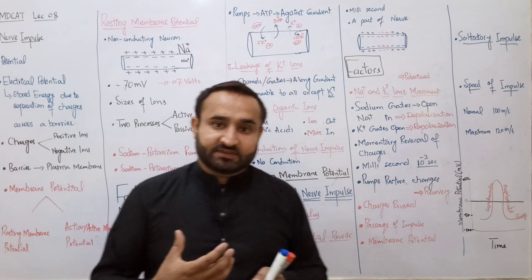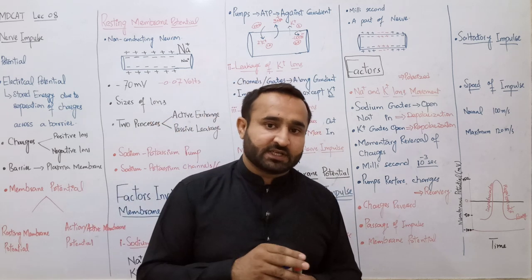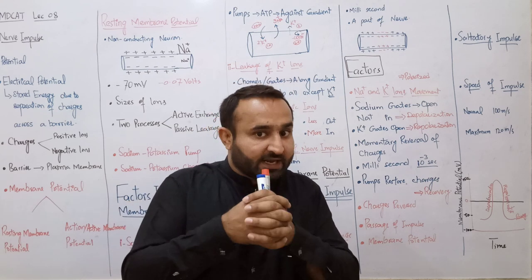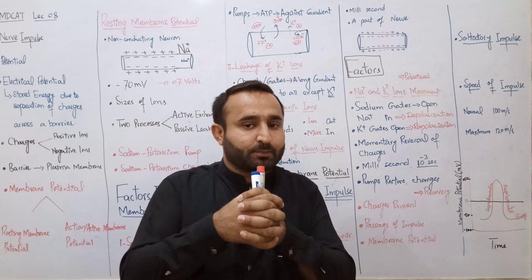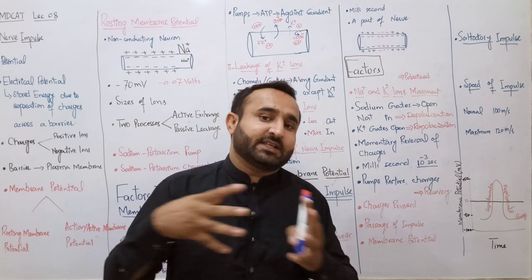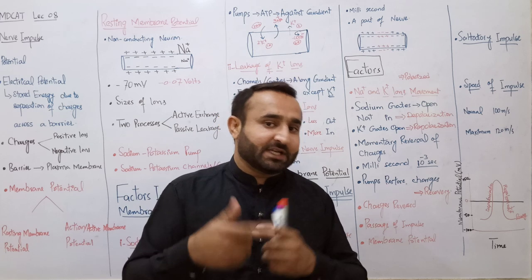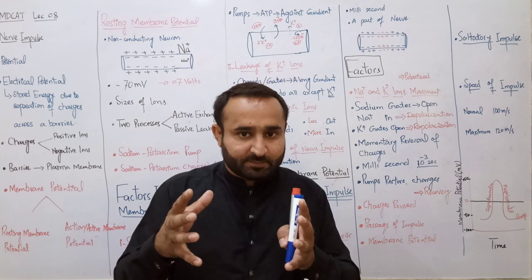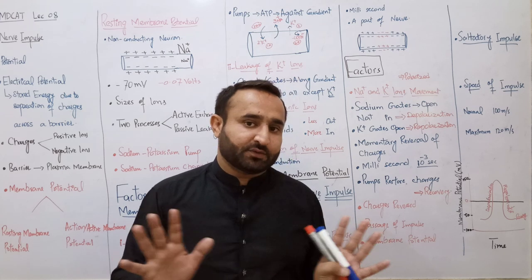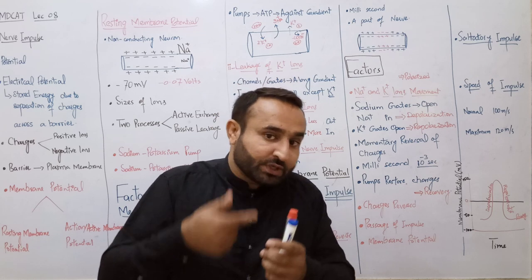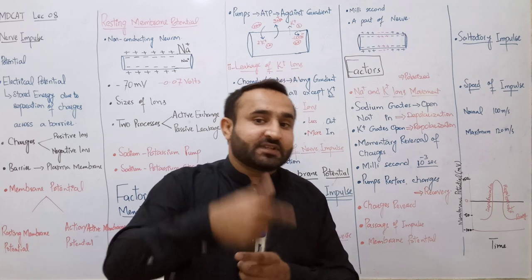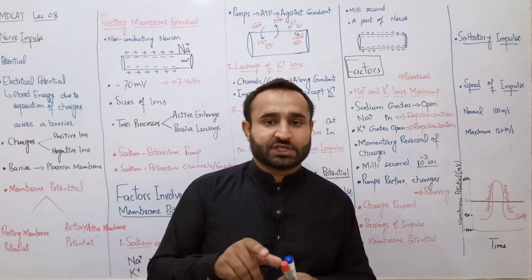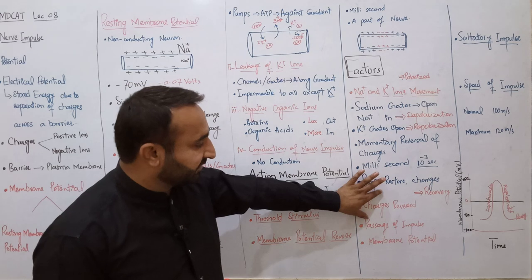جیسے muscle contraction میں rigor mortis - جب ایک شخص مر جاتا ہے تو muscles contract تو کر جاتے ہیں لیکن cross bridges کو binding site سے detach کرنے کے لیے ATP ضروری ہوتی ہے۔ بالکل اسی طریقے سے جب action potential ہے، nerve impulse گزرنی ہے - وہ passive movement ہے، اس کے لیے ATP کی ضرورت نہیں۔ لیکن charges کو recover کرنے کے لیے تاکہ پھر سے impulse move کر سکے، pumps کام کرتے ہیں۔